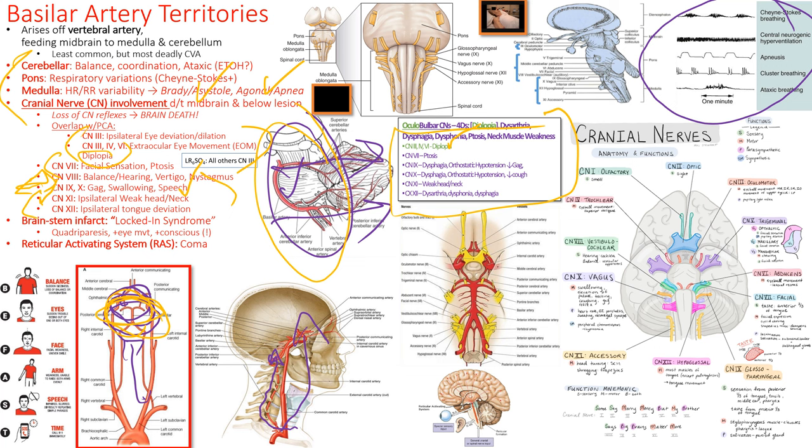Going from the top: cerebellum is for balance; pons is for respiratory regulation; medulla controls heart rate by sending signals via sympathetic and parasympathetic nerves — so now you have heart rate problems, like sinus pauses and other dangerous arrhythmias. They can go bradycardic to asystole, or go agonal and apneic, when the medulla doesn't get its blood supply. With a brainstem infarct, everything gets shut down — you have quadriparesis, all four extremities are flaccid, all four extremities can't sense, and the patient is locked in. It's extremely rare but makes good Hollywood movies. The reticular activating system runs up and down the brainstem — it keeps you awake. Benzodiazepines and opiates suppress it, causing respiratory depression.